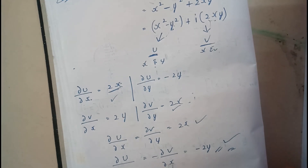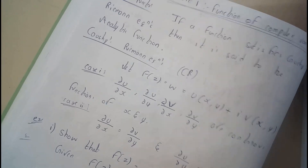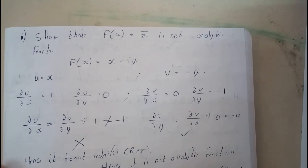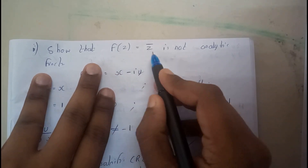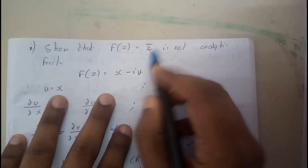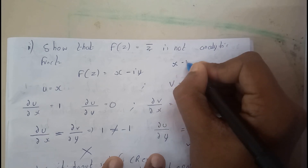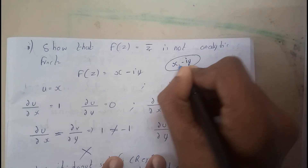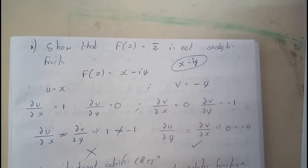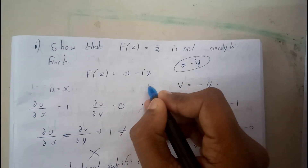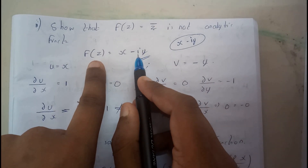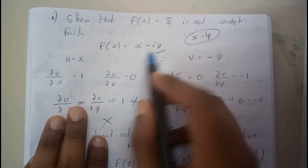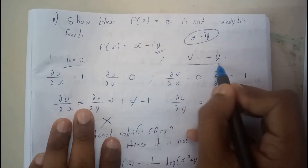Let us go through one more example from the book. It is given: show that f(z) = z̄ is analytic or not. Z̄ = x − iy, whereas z = x + iy. So here u = x and v = −y.